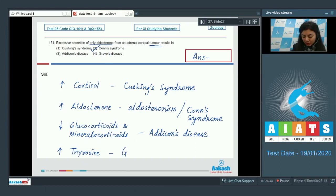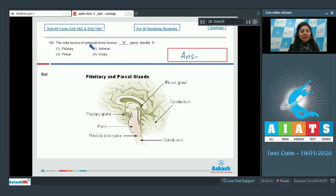The correct answer is option number two, Conn syndrome. Question 162: The sella turcica of sphenoid bone houses X gland, identify X - pituitary, adrenal, pineal, or ovary. The sella turcica is the saddle-shaped depression present in sphenoid bone and it houses pituitary gland.